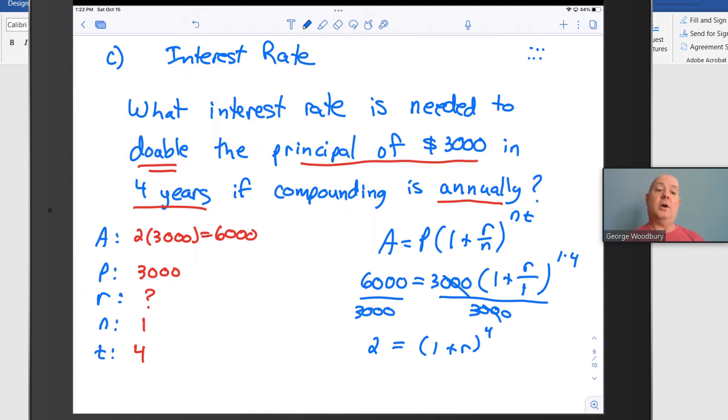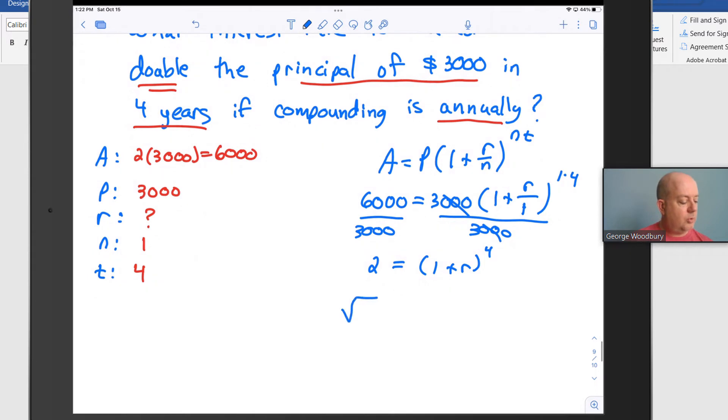Now to solve this for r, I need to get rid of that exponent first. Think about what you would do with your calculator if you plugged a number in for r. You would add 1 first, and then you would raise it to the fourth power. You need to solve those by picking them off in the opposite order. So the fourth power, I can take care of by taking the fourth root of both sides. And so that gives me the fourth root of 2 equals 1 plus r. Then I can subtract 1, and I find that r equals the fourth root of 2 minus 1.